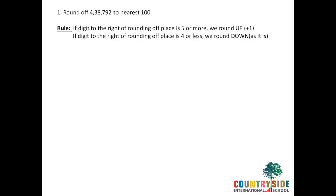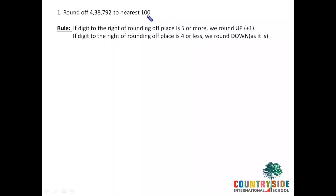Here I have taken a larger number: 4,38,792. It is to be rounded off to the nearest hundred. As it is to be rounded off to the nearest hundred, which digit am I going to round off in the number? This is 1s, this is 10s, this is 100s — so 7 is the rounding off place as it sits in the hundreds position. First of all we will represent this number in the place value system.